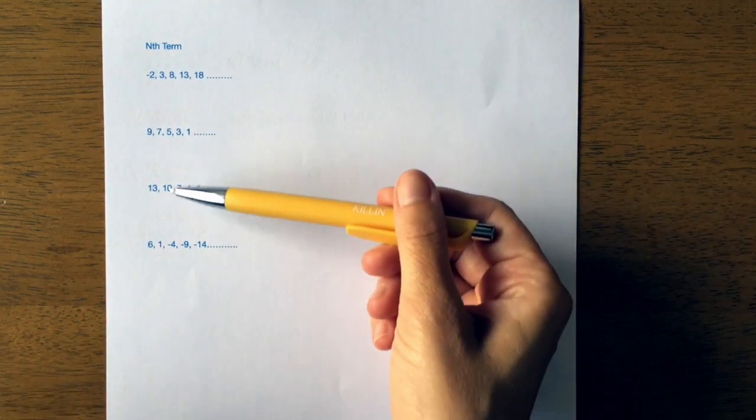I'm going to do a quick recap first on how to find the nth term, and then I'm going to go through some examples with you of decreasing sequences and finding the nth term.